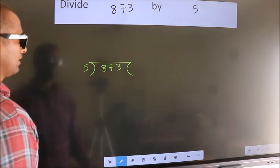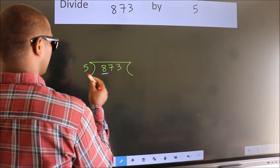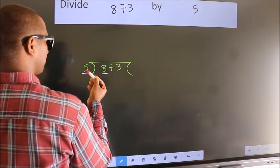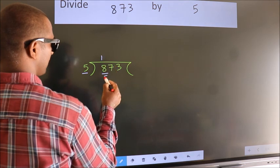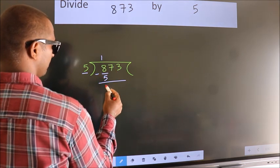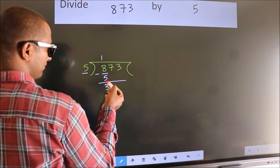Next, here we have 8, here 5. A number close to 8 in the 5 table is 5 once 5. Now we should subtract. We get 3.